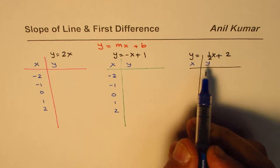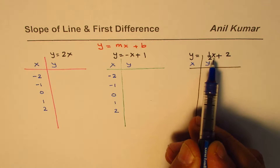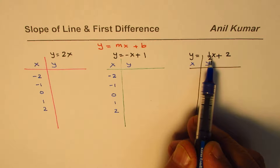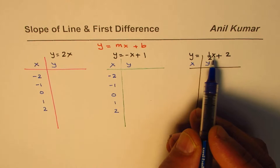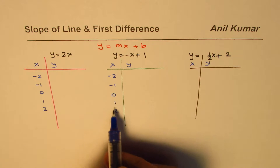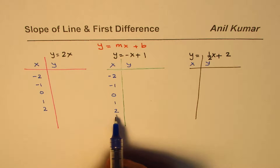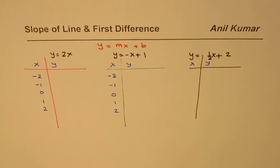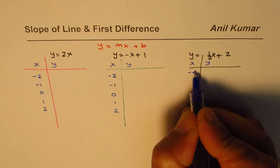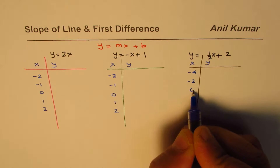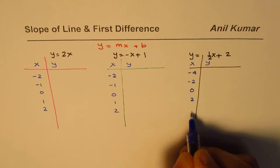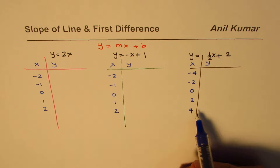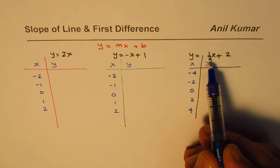For the third equation y = ½x + 2, if we take x = 1 we land up in fractions. To avoid those fractions, we multiply the x values by 2 and take even numbers. So we take x as -4, -2, 0, 2, and 4. The reason is simply for simpler calculations.